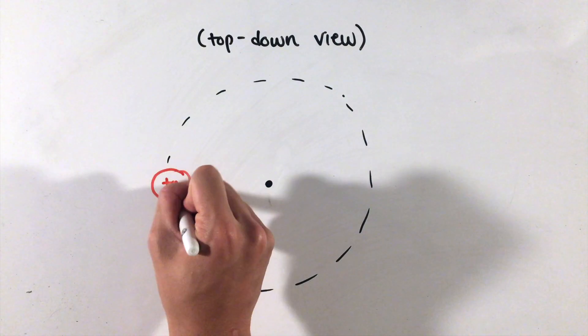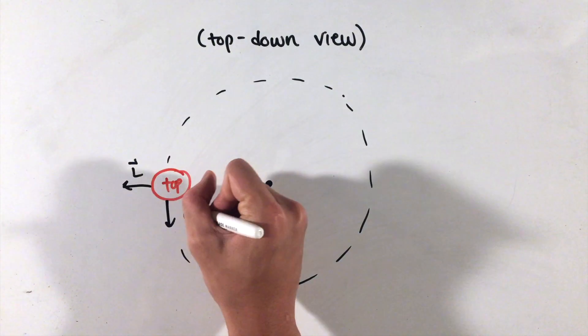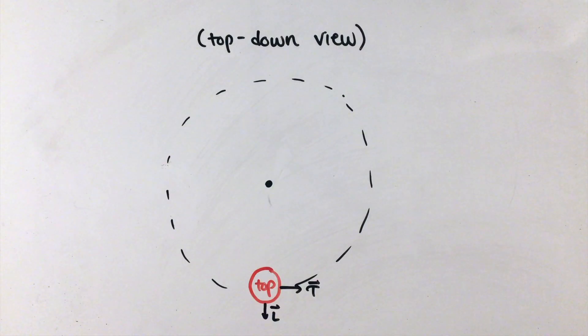Switching to a top-down view of these vectors, we can see that the torque will constantly change the angular momentum in this circular path as the top spins, leading to the precession motion we notice in real life. Solving the rate of precession takes some math.